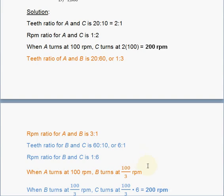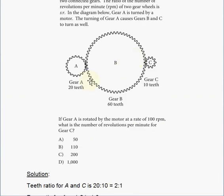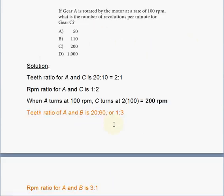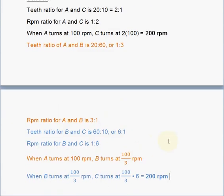So we found out the ratio. We found out the RPM of B. 100 over 3 RPM. Now we can work with B and C to get to C. Now that we know the B. So let's work using a different color now.